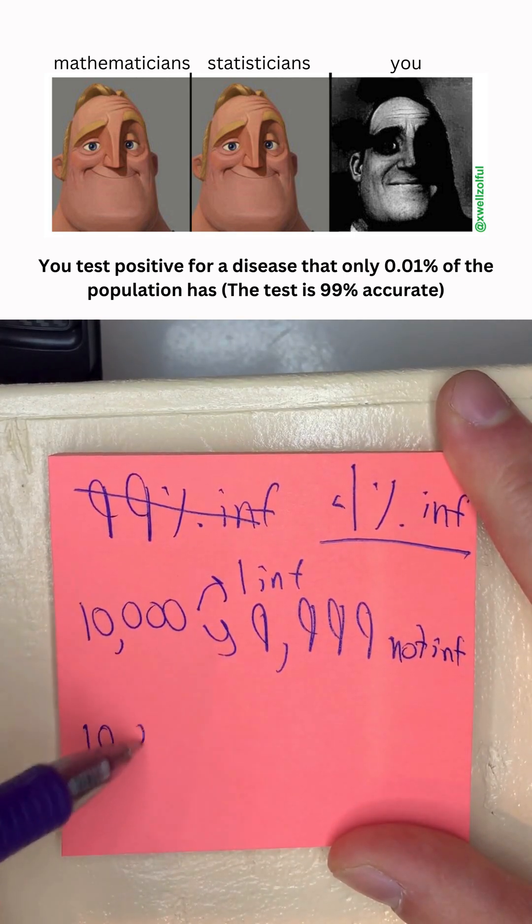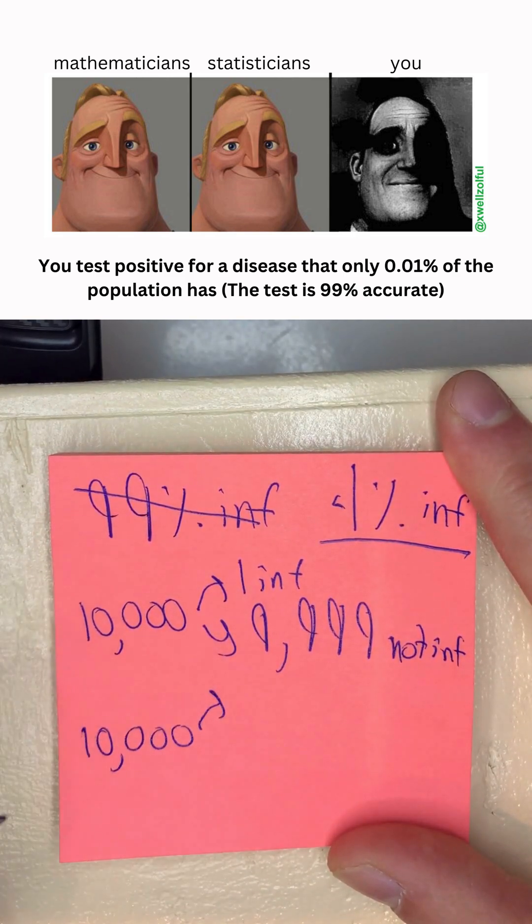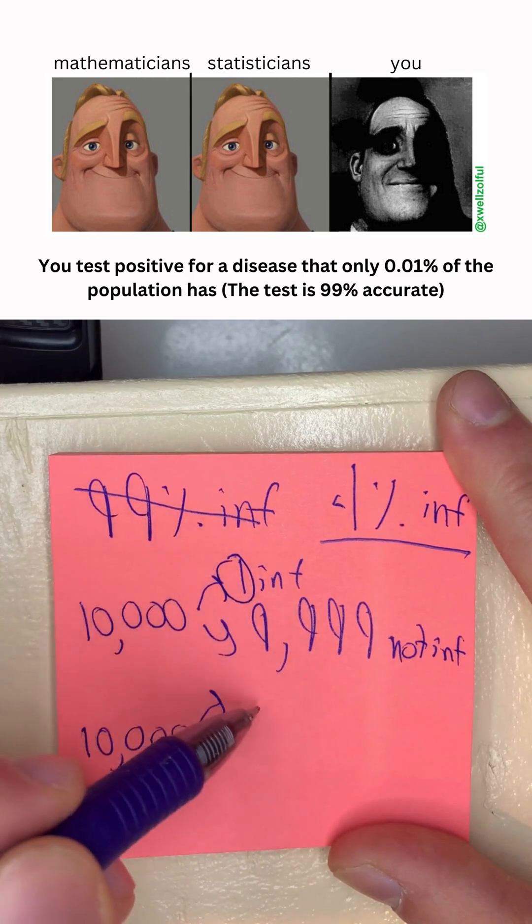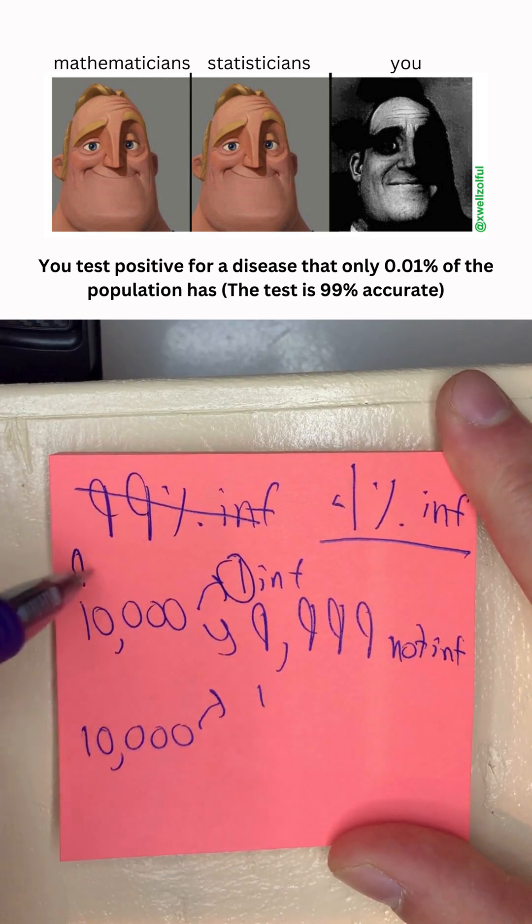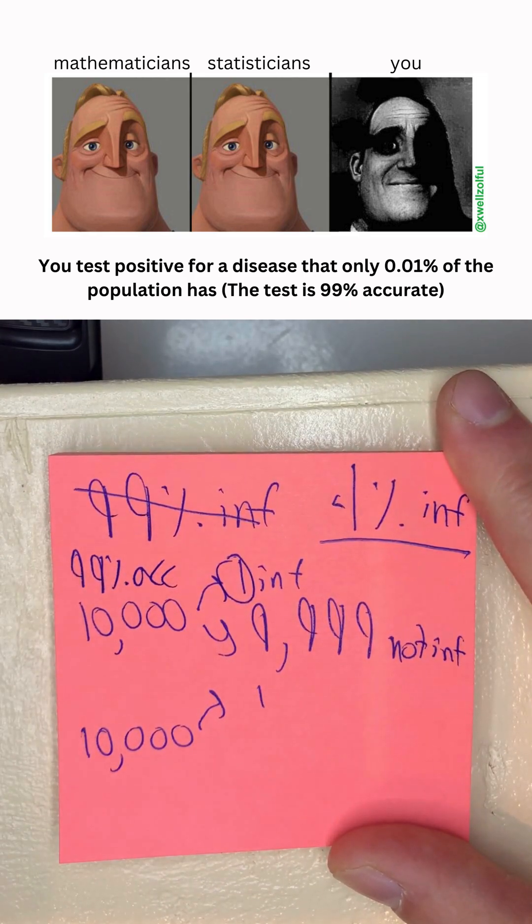But when we go to test these people, we'll take 10,000 tests, and we will likely correctly identify this person as having it. Our test is 99% accurate after all.